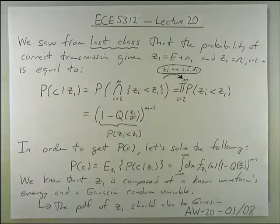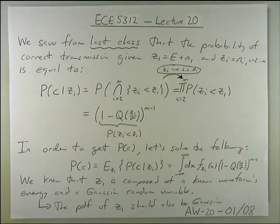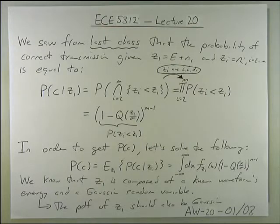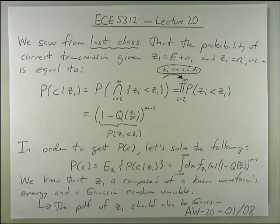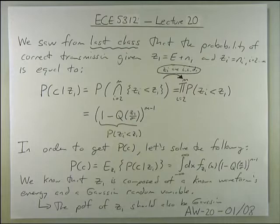This is Lecture 20 of ECE 5312. We're picking up from Lecture 19, which covered the closed-form solution for probability of error performance, especially when you have more than two signals and you're trying to get an exact representation. We chose a very specific m-dimensional waveform that is orthogonal in all m dimensions, so we can have a mathematically tractable solution. Otherwise, things get very messy quickly.